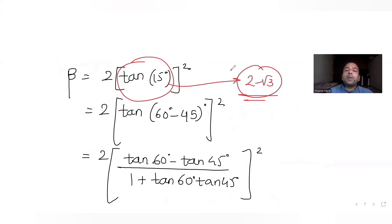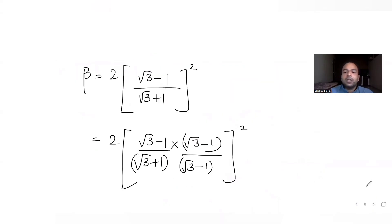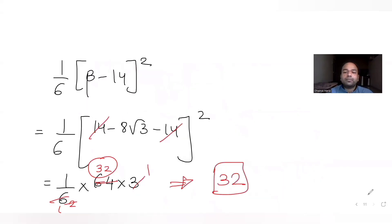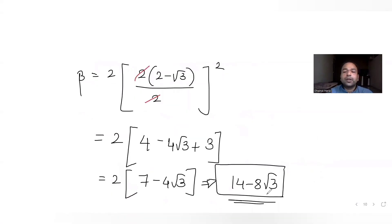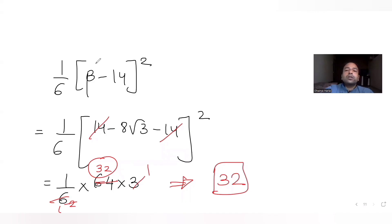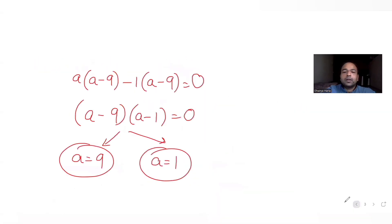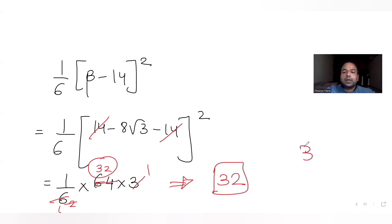Using tan(15°) = 2 - √3 — either recalled directly or derived via tan(60° - 45°) — we got β = 14 - 8√3. Substituting into the final expression yields 32, confirming option B as the correct answer.